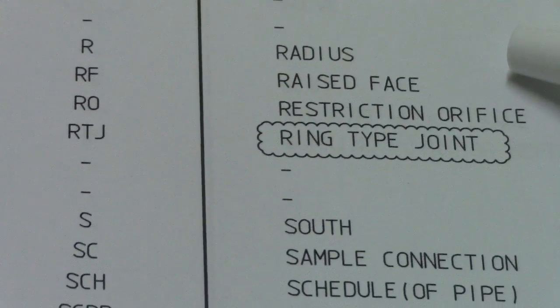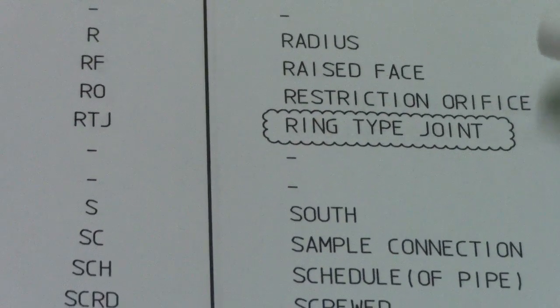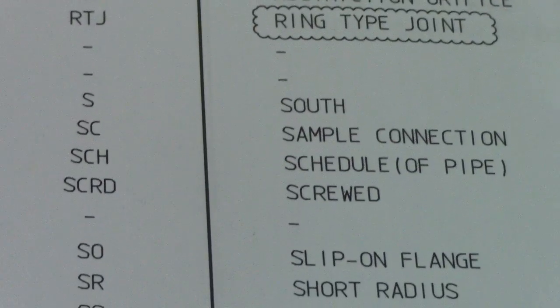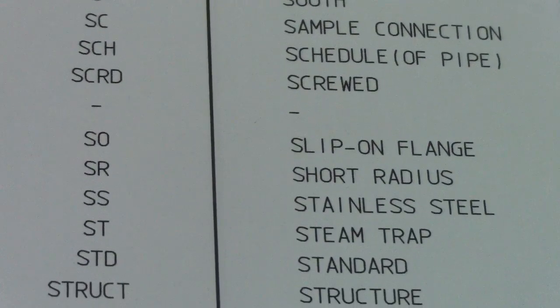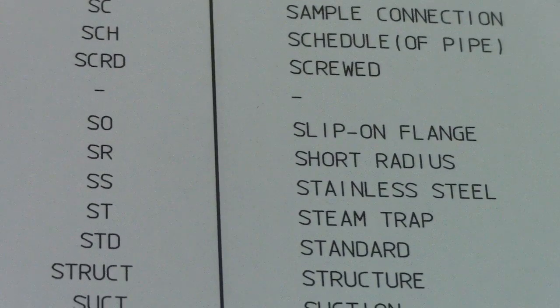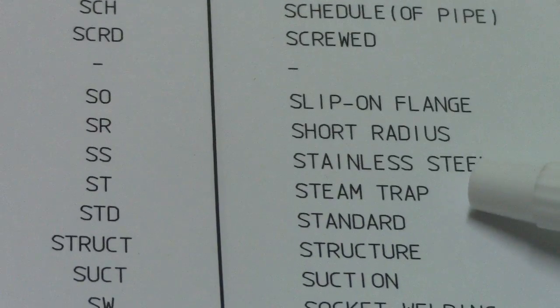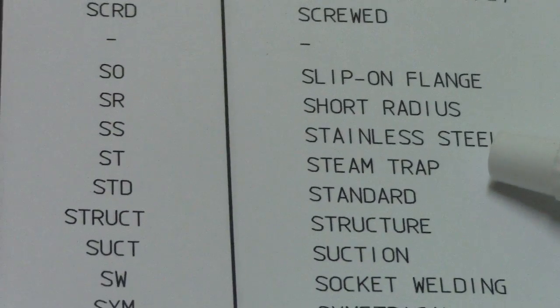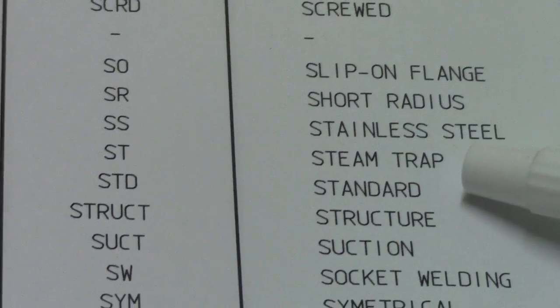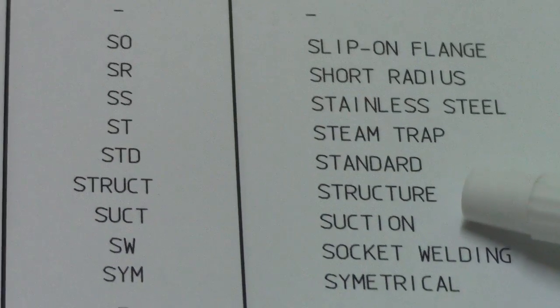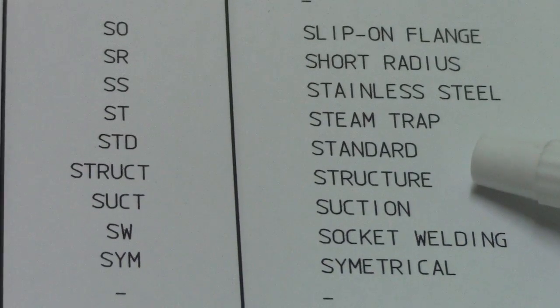S is south, SL is swaged nipple lock connection, SCH is schedule, SCR is screwed, SOF is sleeve-on flange, SR is short radius, SS is stainless steel, ST is steam trap, STD is standard, STR is structural, SW is socket weld, and SYM is symmetrical.